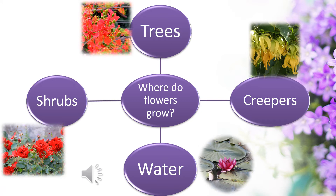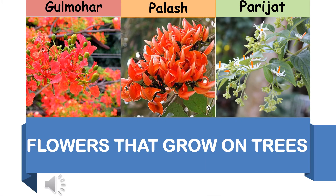Flowers like gulmohar grow on trees. On the other hand, a rose flower grows in a shrub. There are some flowers which grow on water as well, like lotus. And some flowers like jambah grow on creepers. So flowers grow on trees, shrubs, water and creepers. Now let us look at some examples of flowers that grow on trees. Gulmohar is a very common flower that we see around growing on trees. Flowers of palash and parisat are also examples of such flowers. Parisat is also a very common flower which you will see growing in your surroundings on trees.